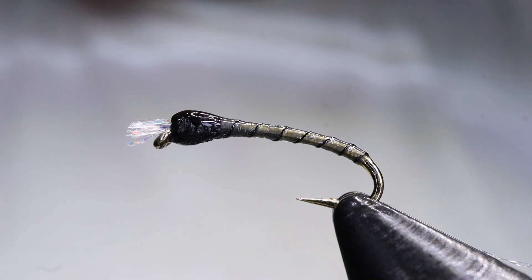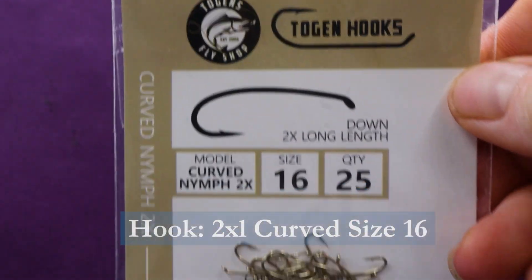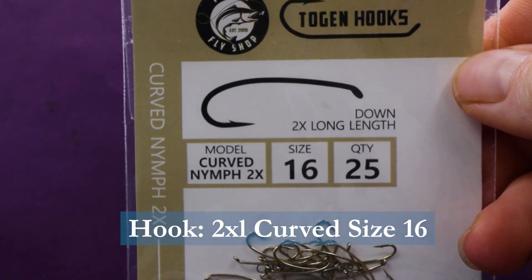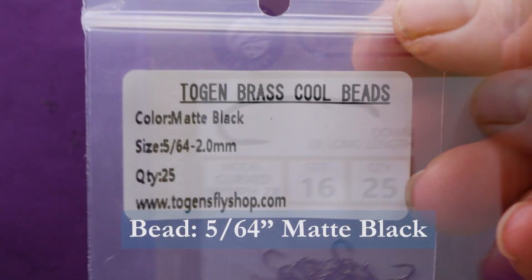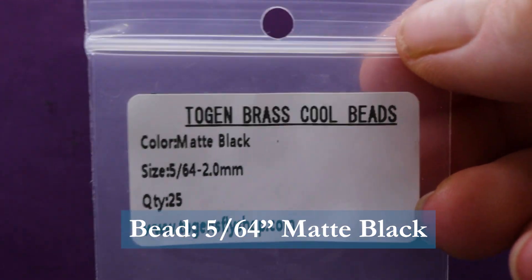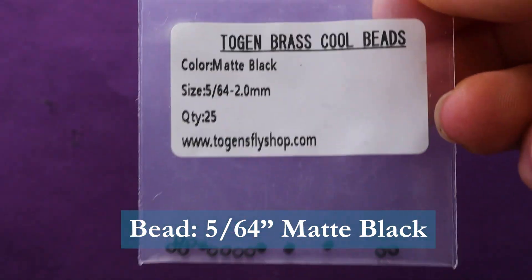Make sure you have these materials handy before you tie the fly. For a hook I'll be using a Togans curved nymph hook, two times long, size 16. The bead I'm using is a brass cool bead, the color is matte black, size 5/64th, 2.0 millimeter.